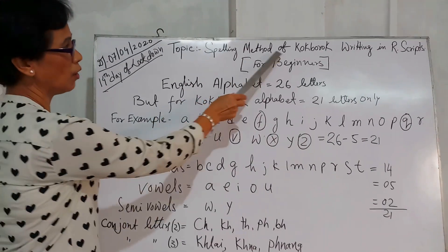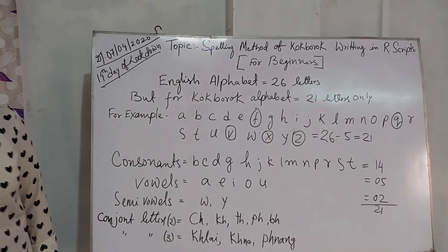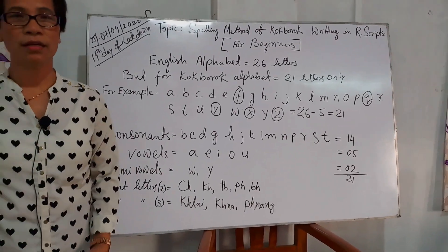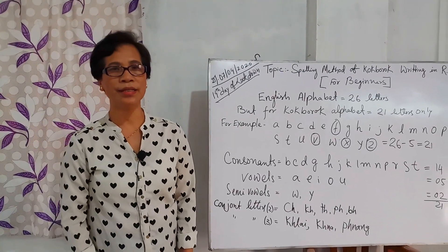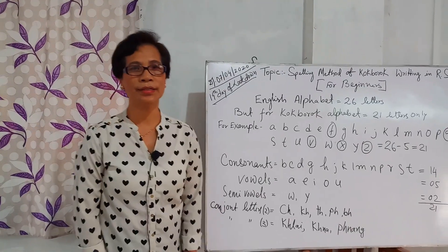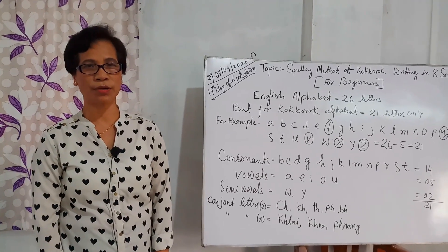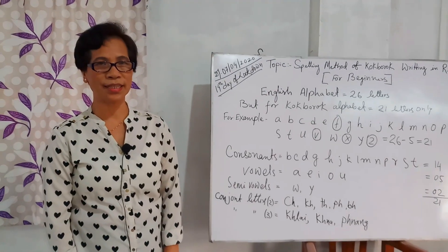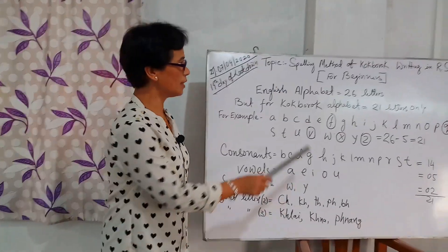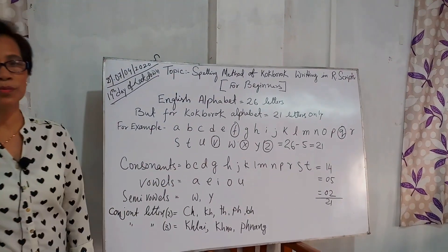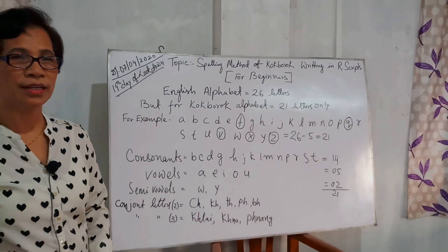The spelling method of Kokbarok is writing in the Roman script. You can use Facebook, WhatsApp, etc. This is the spelling method of Kokbarok, just for beginners. The spelling method is done using the English language.